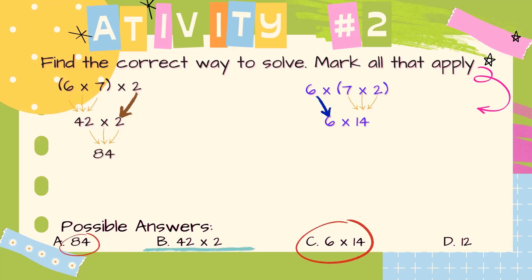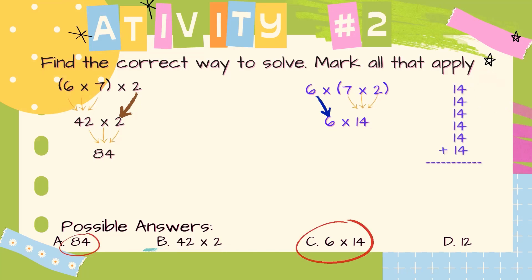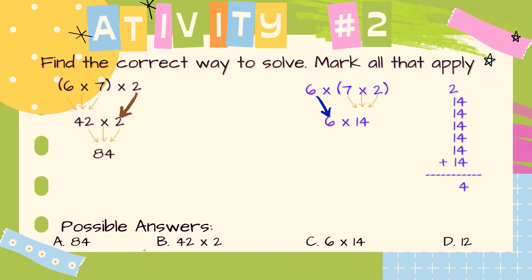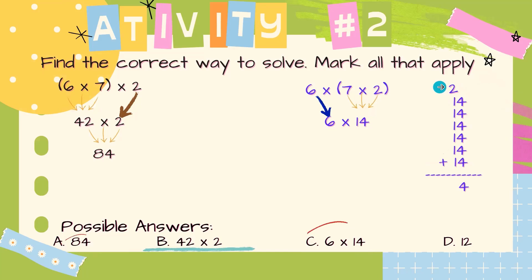Then we add 42 plus 42, or multiply 42 times 2, and it is 84. That's one option. The other option is repeated addition: 14 plus 14 plus 14 plus 14 plus 14 plus 14 plus 14, which is also 84.